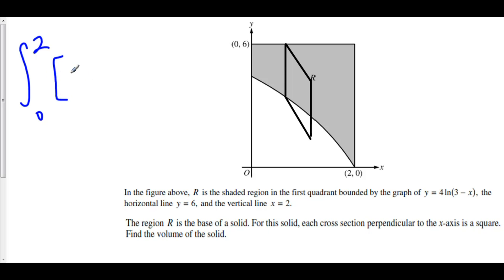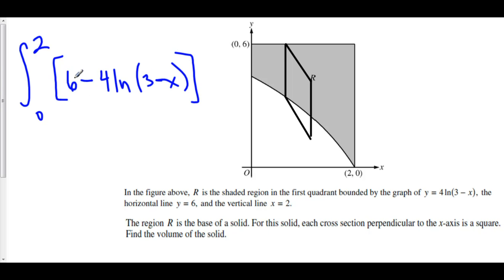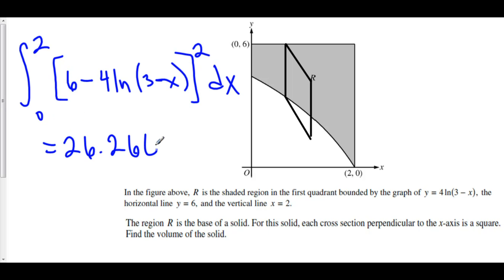What is the side of this square? The side is 6 — our upper function — minus our lower function, which is 4 times the natural log of 3 minus x. This is the side of our square, and the area of our square is side squared. This is the integral we have set up to find the volume of this solid, and the volume is 26.266.